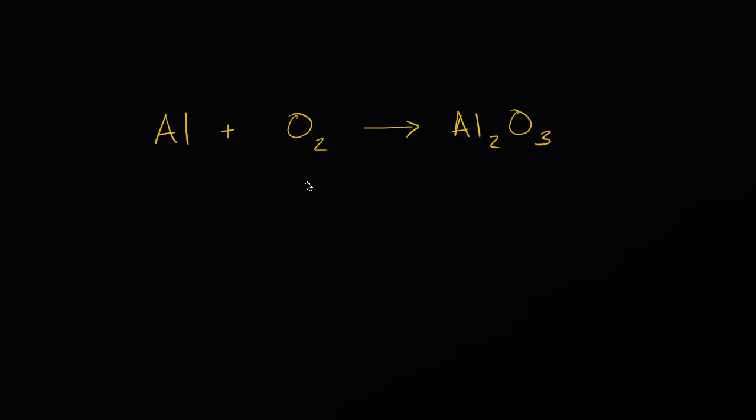Well, this is a chemical equation right over here. It's describing a reaction. So if I take an atom of aluminum and I add it to a dioxygen molecule, so a molecule that has two oxygens with it, under the appropriate conditions, they will react to form aluminum oxide. And the aluminum oxide molecule has two aluminum atoms and three oxygen atoms.